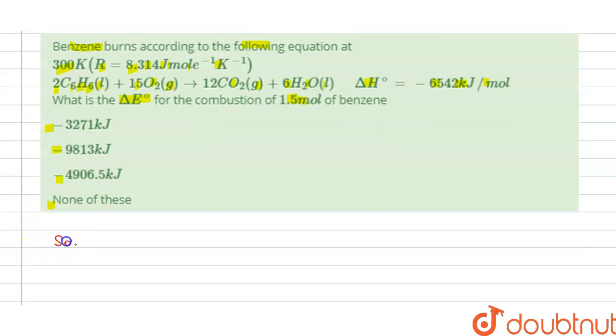The solution to this question: delta ng is the number of moles of the gaseous product minus reactant. In product we have gas number of moles 12, and this is minus 15, so we get minus 3. This is our delta ng.